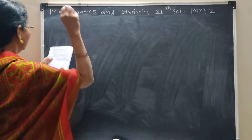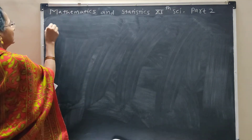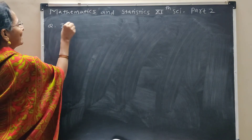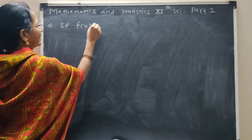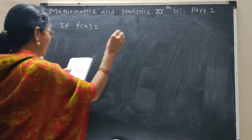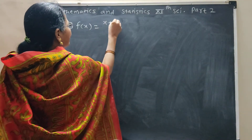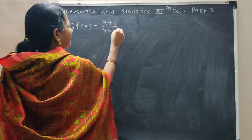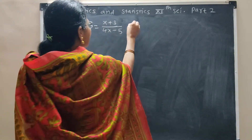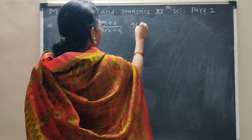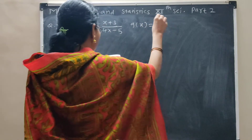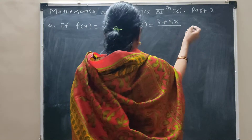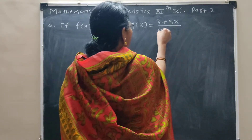Next question. If f(x) is equal to (x plus 3) upon (4x minus 5), and g(x) is equal to (3 plus 5x) upon (4x minus 1).